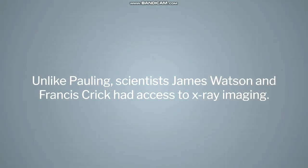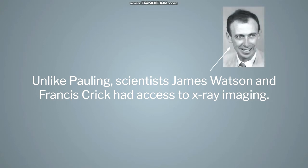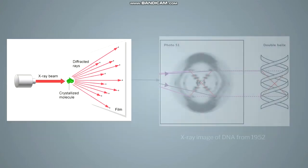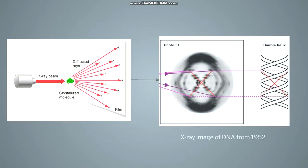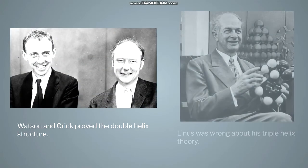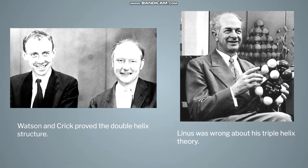Remember how I said he didn't have access to x-ray imaging? Well, scientists James Watson and Francis Crick did. X-ray crystallography is a measurement where a carefully aligned beam of electrons is directed at a material. By precisely measuring how the beam is reflected, you can identify layers or structures in the material. This technique was used to prove that Linus was in fact incorrect about his triple helix model, and the double helix DNA model was consequently set in stone by Watson and Crick.